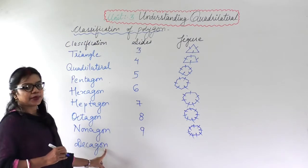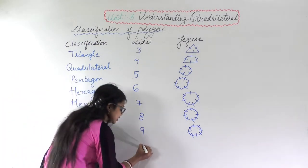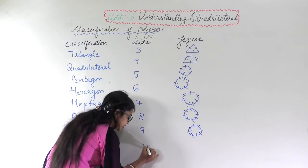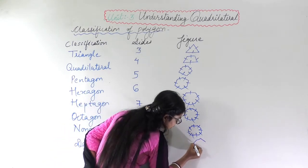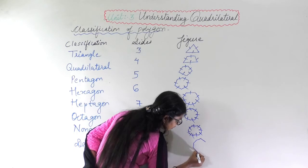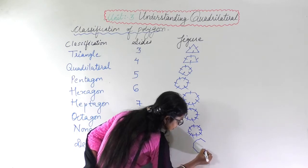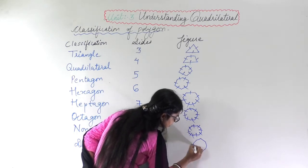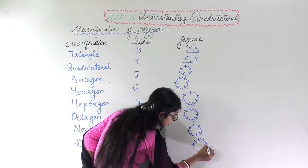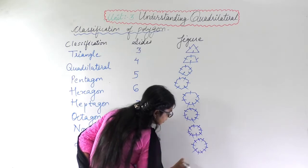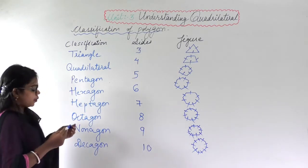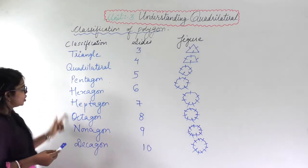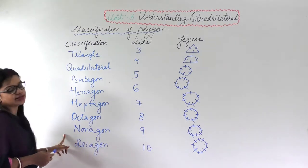Deca means ten. So how many sides? Ten sides. I will make one, two, three, four, five, six, seven, eight, nine, and ten. These are the classifications of polygon, where the number of sides and figures have been explained.